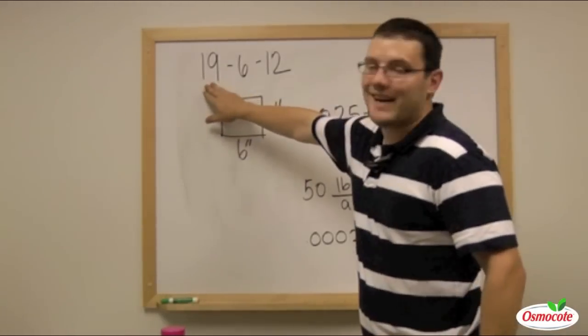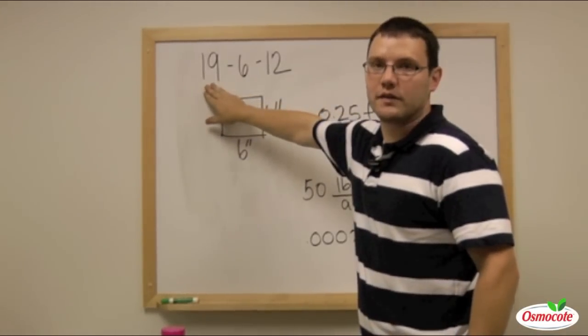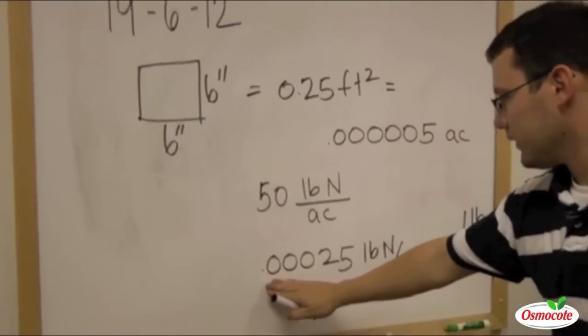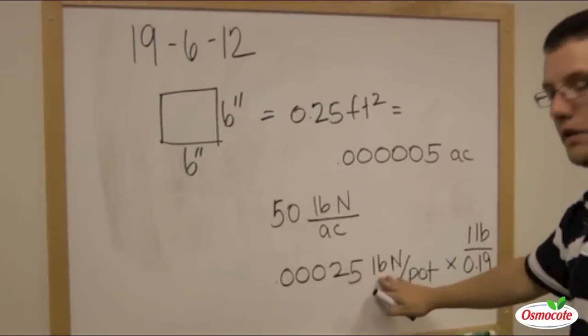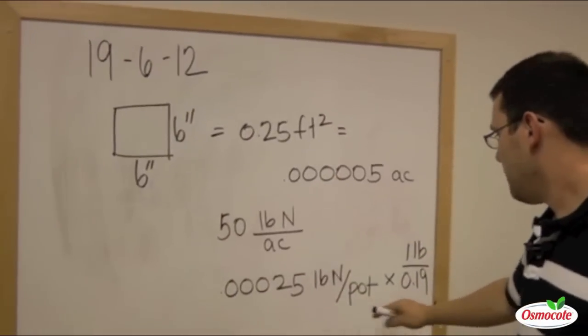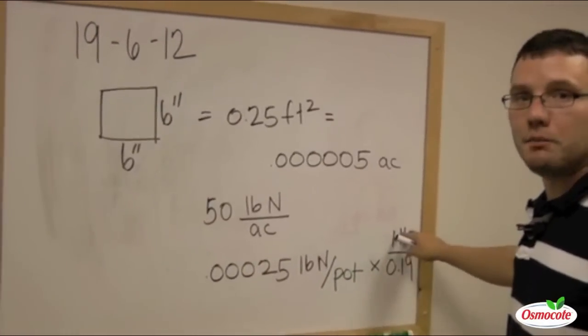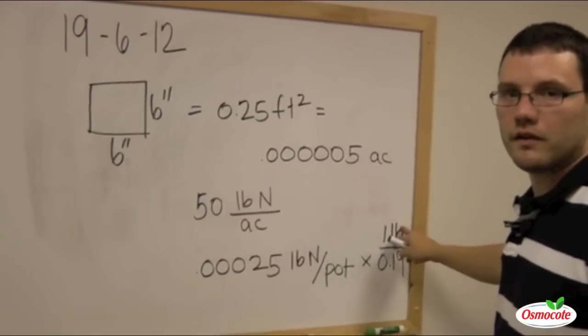Now our Osmocote is 19% nitrogen. We need to multiply our total number of pounds of nitrogen per pot by the amount of nitrogen that is in each pound of Osmocote fertilizer.